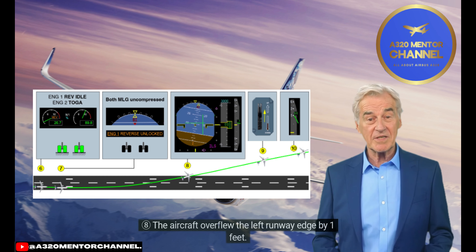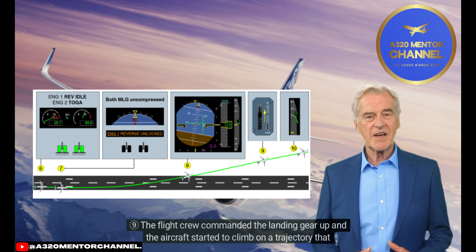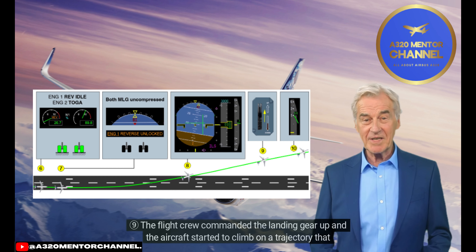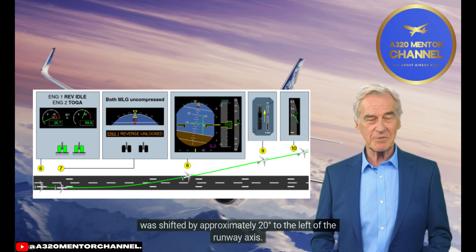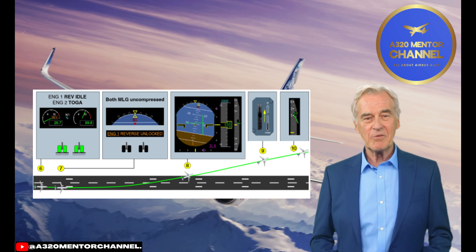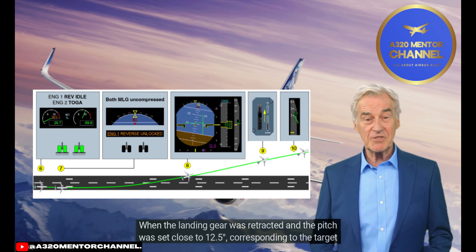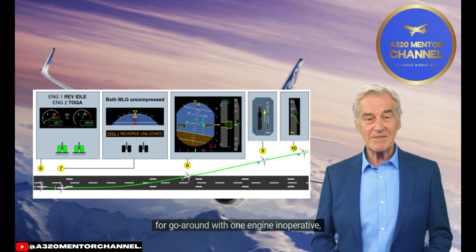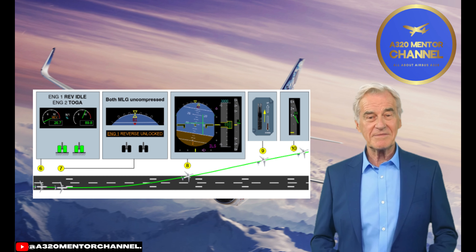Step 8: The aircraft overflew the left runway edge by one foot. Step 9: The flight crew commanded the landing gear up and the aircraft started to climb on a trajectory shifted approximately 20 degrees to the left of the runway axis. When the landing gear was retracted and the pitch was set close to 12.5 degrees — corresponding to the target for go-around with one engine inoperative.